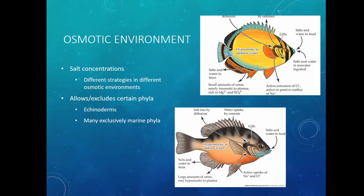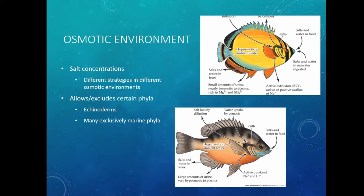So let's first talk about that salt — the osmotic environment. Organisms need to do things very differently in different osmotic environments, and this allows or excludes whole phyla. Echinoderms — things like sea stars, sea cucumbers, sea urchins — we do not find any freshwater echinoderms. They are osmoconformers, meaning they don't control the amount of salt and water in their bodies, and that just doesn't work in freshwater systems. So whole phyla are eliminated from being able to be in freshwater.